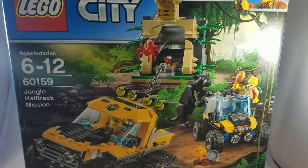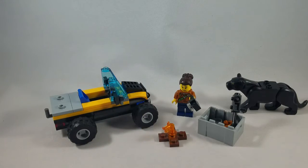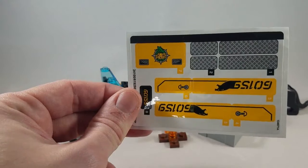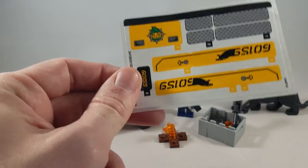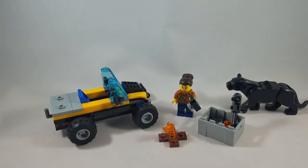All right, so this set is basically broken down into three numbered bags. Each numbered bag has its own little instruction booklet, which is a little bit weird. It seems like an awful lot of paper and an awful lot of books for what is actually such a small set. The set also includes 10 stickers that you have to apply to finish things off.